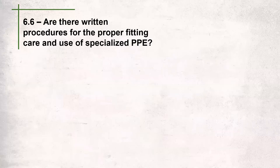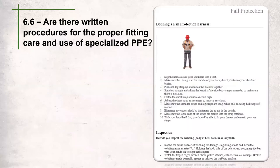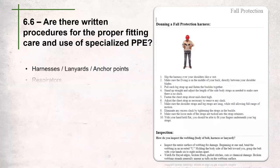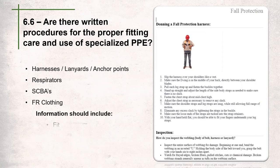Question 6.6 asks: are there written procedures for the proper fit, care, and use of specialized PPE? Auditors will look for specific written procedures for any specialized PPE the company uses — examples include harnesses, lanyards, and anchor points; respirators; self-contained breathing apparatuses; and fire-rated clothing. These procedures should include information on fit, care, use, and the limitations of the PPE.